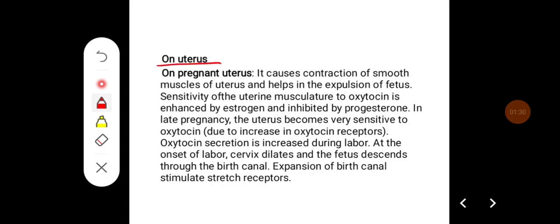On the pregnant uterus, oxytocin causes contraction of smooth muscles and helps in expulsion of the fetus. Sensitivity of the uterine musculature to oxytocin is enhanced by estrogen and inhibited by progesterone.